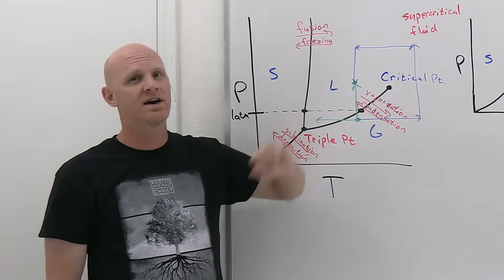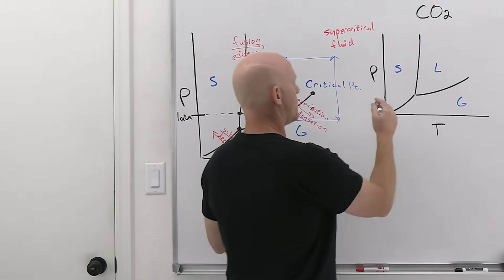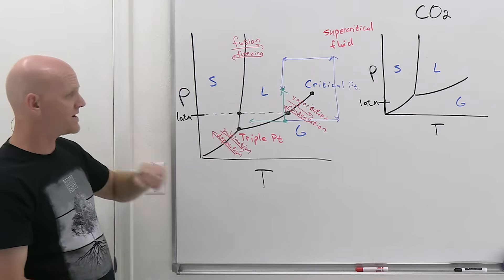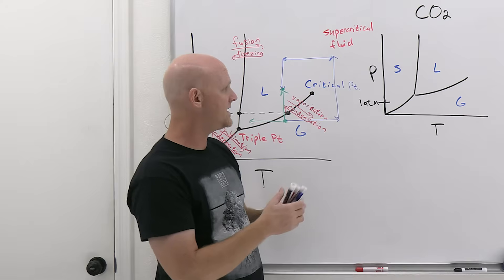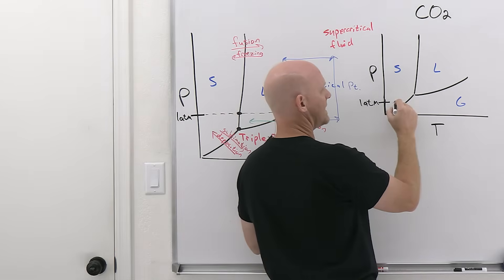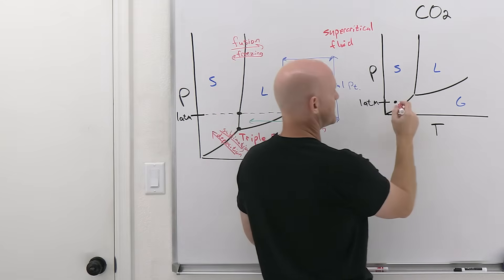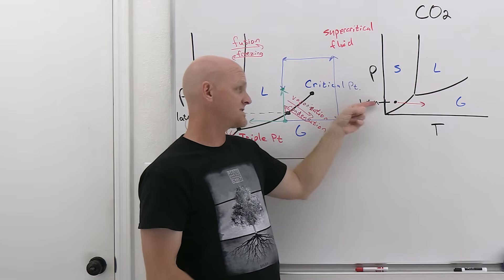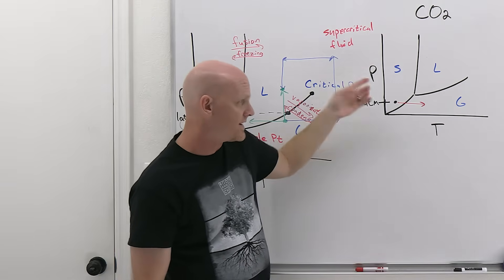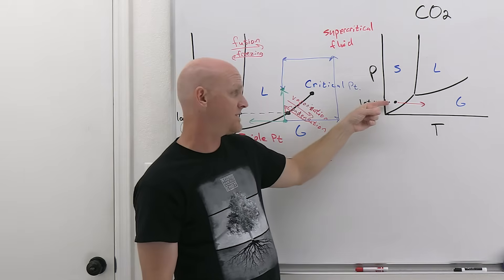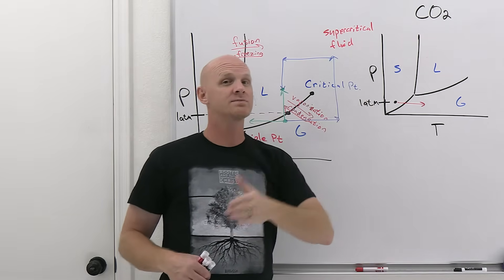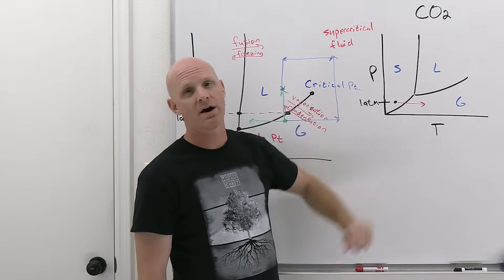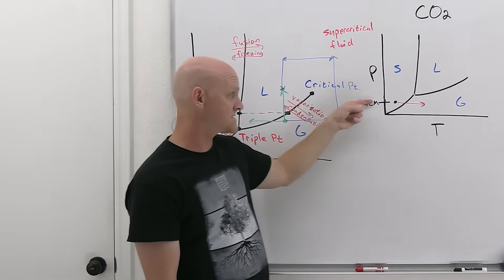What makes carbon dioxide unique is where one atmosphere lies. For CO2, that one atmosphere actually lies below the triple point, which is unusual. As a result, if you heat up solid carbon dioxide — dry ice — it sublimes rather than melts; it never turns into liquid CO2 at one atmosphere. Liquid CO2 only exists at pressures higher than the triple point. That's why it's called dry ice: it goes straight from solid to gas and never feels wet.